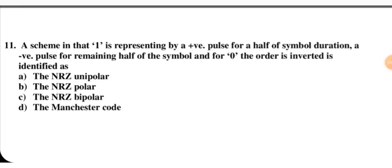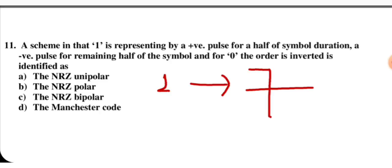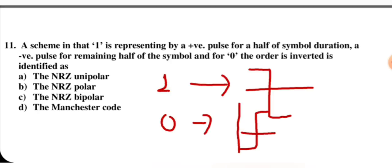In Manchester coding, 1 is represented by a positive pulse for half the symbol duration followed by a negative pulse for the other half. For 0, the order is inverted — half cycle negative followed by half cycle positive. So D is the correct option for this question.